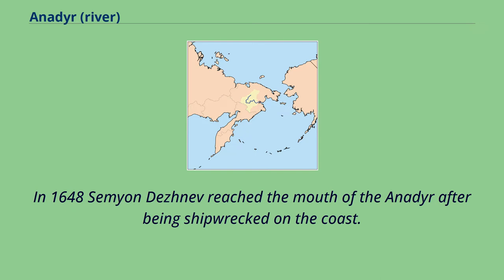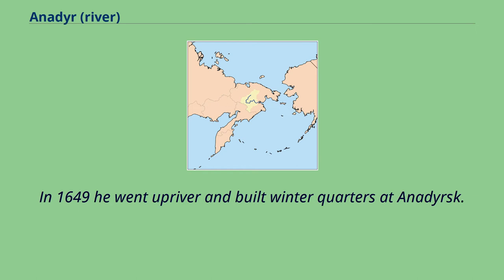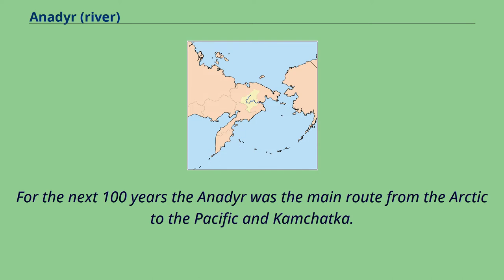In 1648, Semyon Dezhnev reached the mouth of the Anadyr after being shipwrecked on the coast. In 1649 he went upriver and built winter quarters at Anadyrsk. For the next 100 years the Anadyr was the main route from the Arctic to the Pacific and Kamchatka.